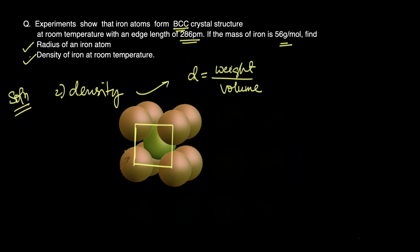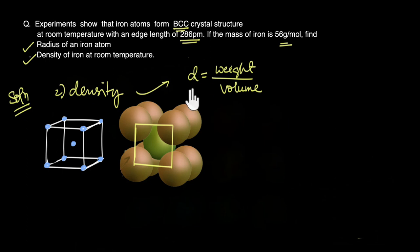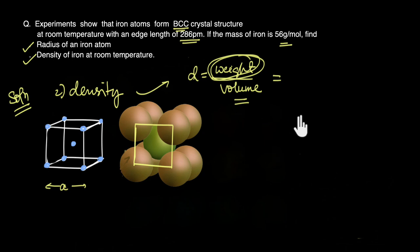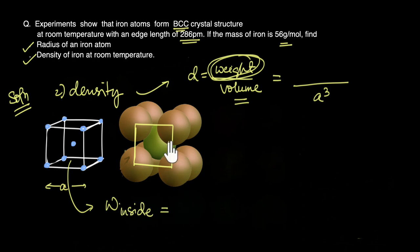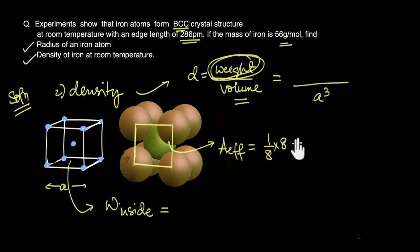To calculate the density of the unit cell, we need its weight and volume. If the unit cell has edge length A, the volume is A cubed. The weight equals the mass of iron atoms inside the unit cell. In BCC, the effective number of atoms inside is 1/8 × 8 (corner atoms) plus 1 (body-centered atom), giving 2 effective iron atoms per unit cell.